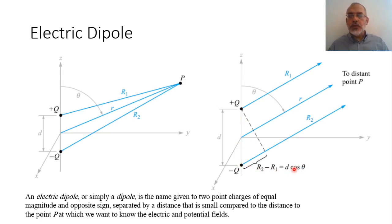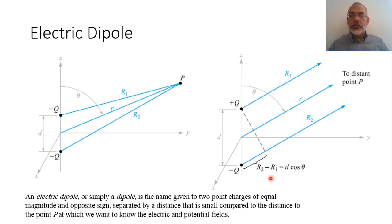As a magnitude, we use R1 = R2 = R, where R is the distance from the origin. But when talking about the difference between R2 and R1, we take the value d·cosθ. This is the basic approximation used in the analysis of this dipole. An electric dipole is the name given to two point charges of equal magnitude and opposite sign separated by a distance that is small compared to the distance of the point at which we want to find the electric field and electric potential.